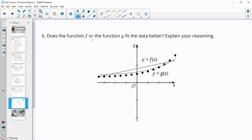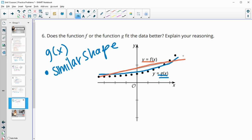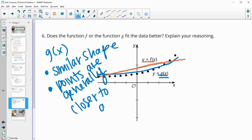Then the last one, number 6. Does the function f or g fit the data better? So g is this one down here. And then f is this linear one here on the top. So which one models the data better? And I would say it's g of x, number one, because it's a similar shape. So it's curving like those dots are versus the orange one is just straight. And then g of x, the line is closer to the points or the points are closer, generally closer. Not all of them are closer, but generally closer to g of x.